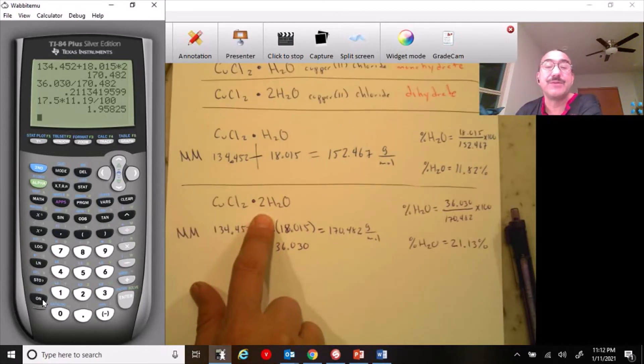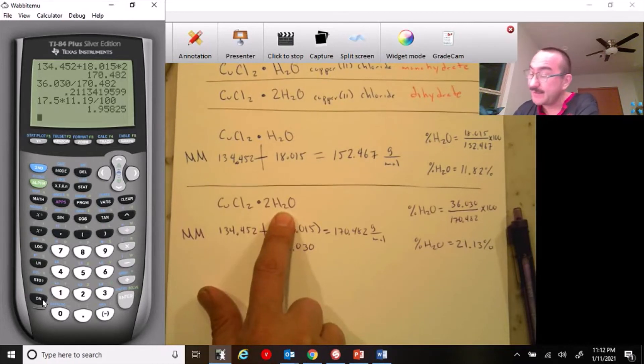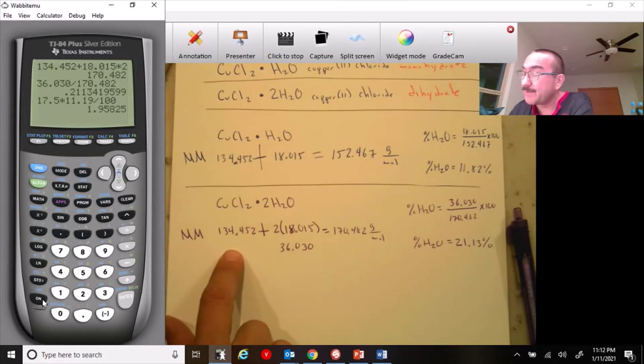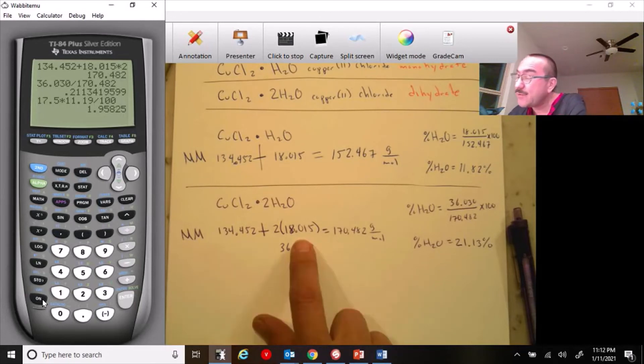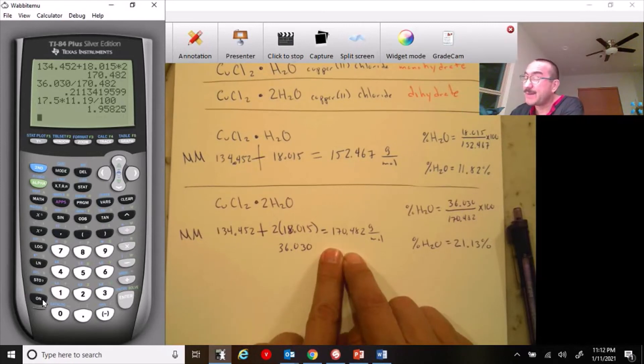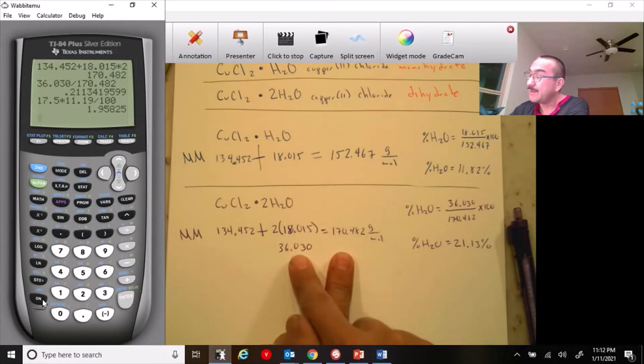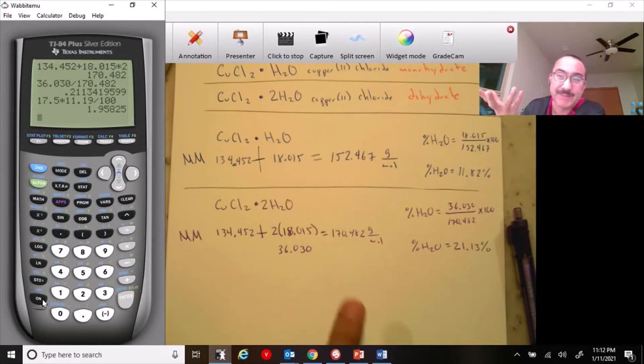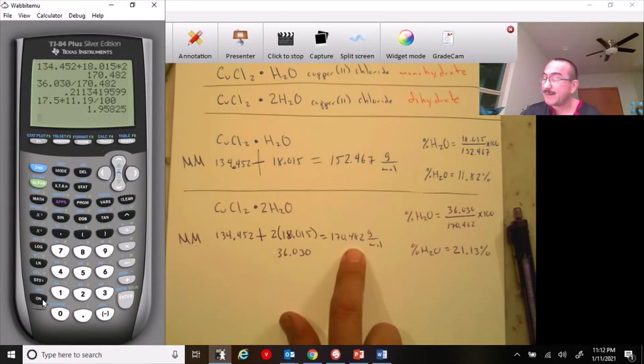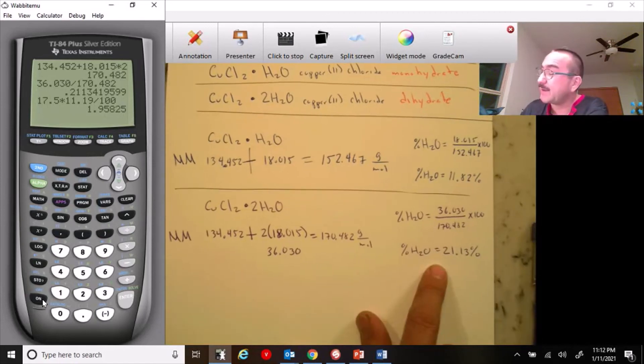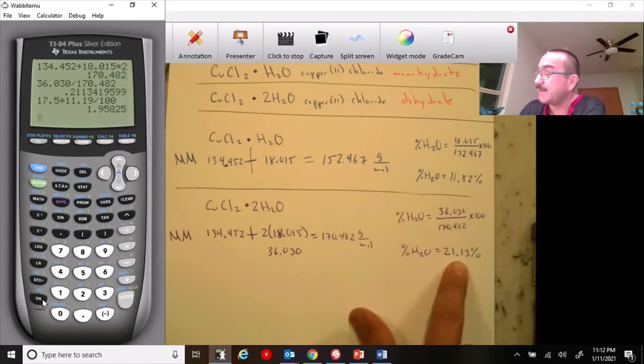Notice how it changes if I have two water molecules. This is the copper to chloride dihydrate. Well, the original, the base copper to chloride molar mass stays the same, but now we're adding two waters. The total is bigger because this one has more water, right? So when I do my division, it's the total water divided by the new total mass. You see that? So nothing is the same thing. The water divided by the molar mass. If it's one water, one. If it's two water, it's two. If it's three water, it's three, divided by the molar mass of total. Notice here, the water has become 21.13% of the whole compound.